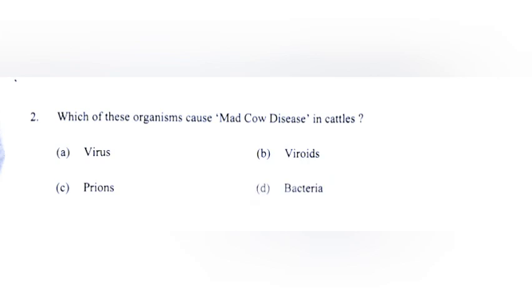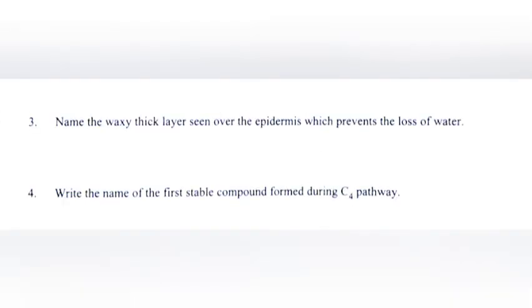Which of these organisms cause mad cow disease in cattle? A) virus, B) viroids, C) prions, D) bacteria. Answer: C, prions.